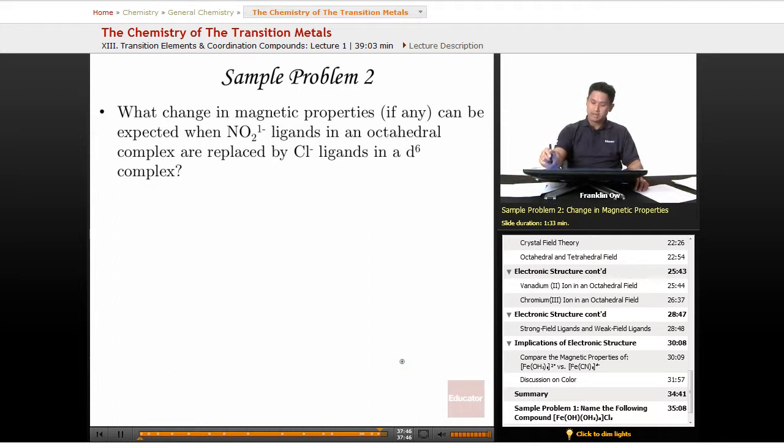When we look up the spectrochemical series, we see that the NO2^- ligand is going to be a stronger field ligand than Cl^-.